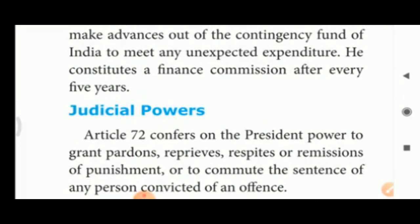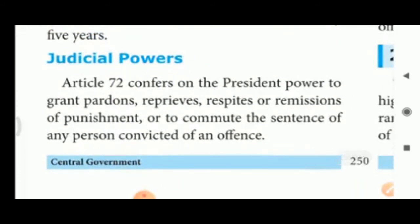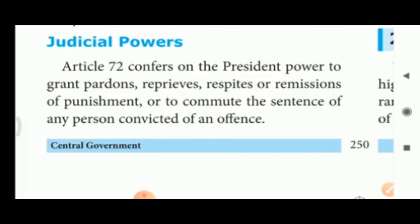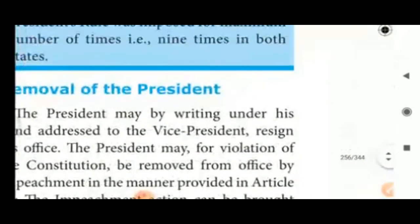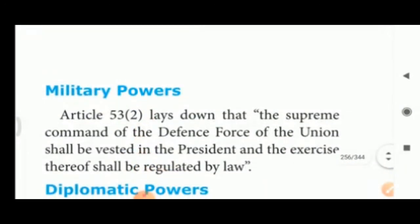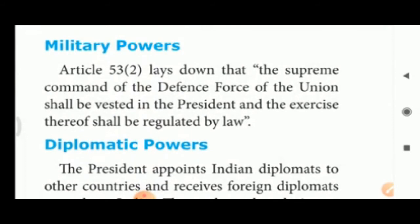Judicial powers: Article 72 confers on the President the power to grant pardons, reprieves, respites, or remissions of punishment, or to commute the sentence of any person convicted of an offense. Pardon means to forgive, reprieve relates to punishment, and commute means to reduce — for example, reducing a sentence from 20 years to 5 years.